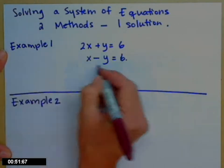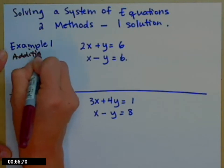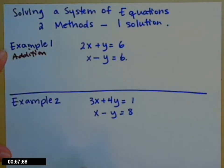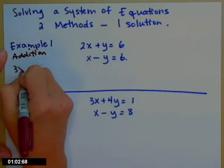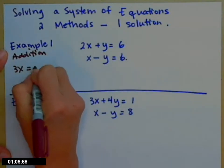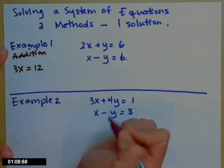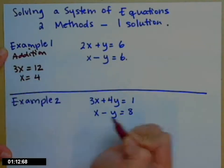Let's go ahead and use the addition method and add the two sides of those equations together. So 2x plus x is 3x. Plus y and minus y is 0y, so I'm not going to write those. And then 6 plus 6 is 12. 3x equals 12, which means that x equals 4.